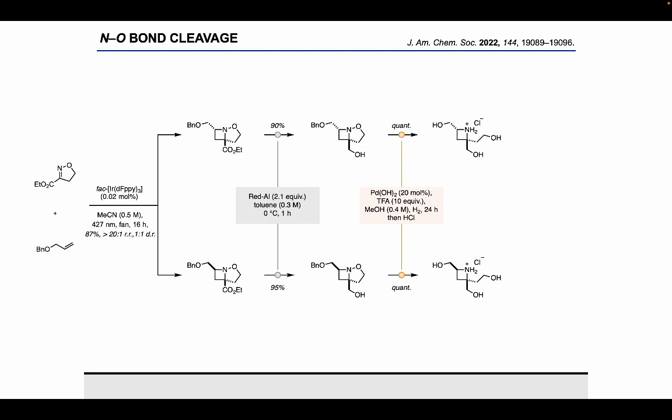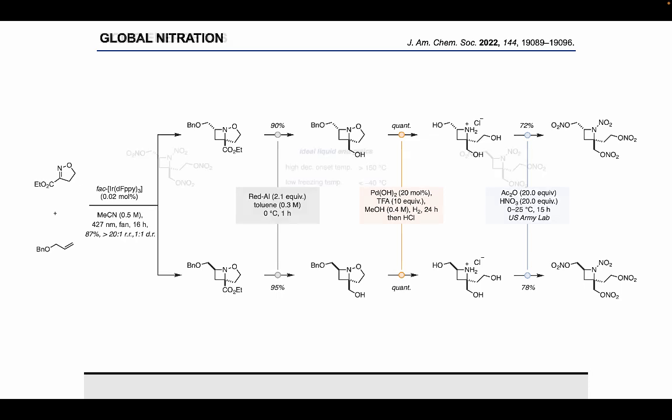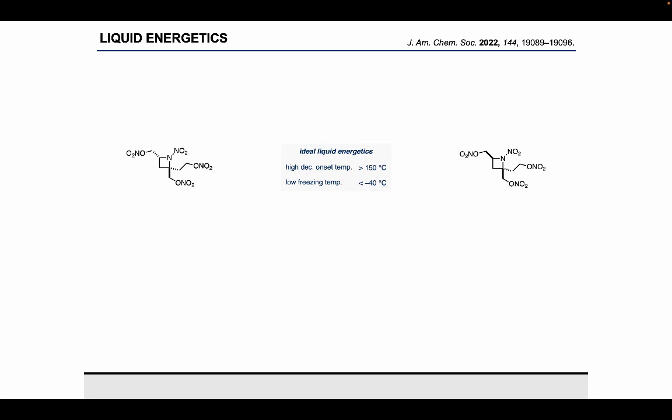We were able to access multiple grams of each of these materials that we then sent to our collaborators, where they were able to perform the nitration in good yield to access these nitroazetidine products. These are actually quite different than what we had previously seen, in that these were now liquid energetic materials. They had high onset of decomposition temperatures and low freezing temperatures. This was ideal as a potential propellant plasticizer.